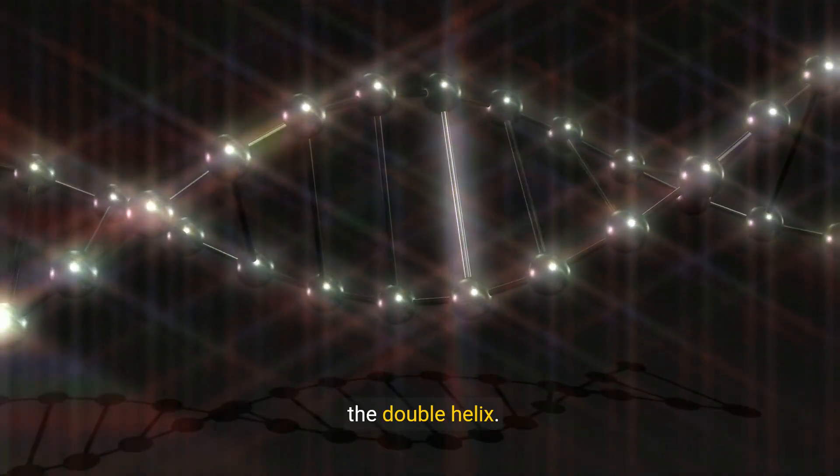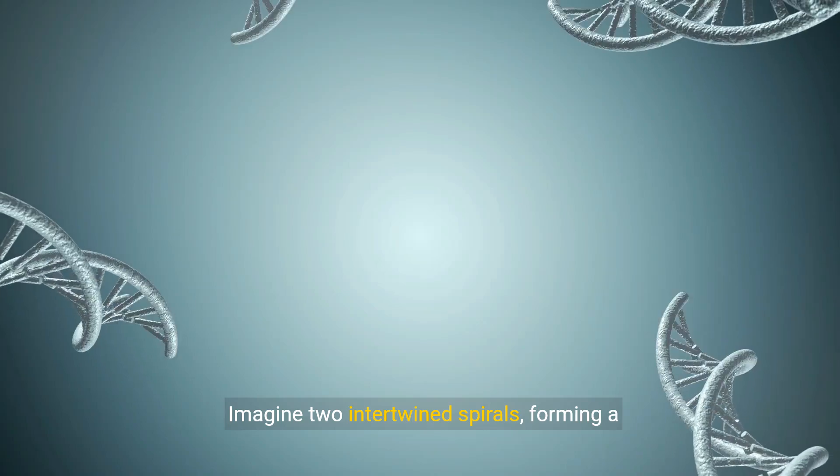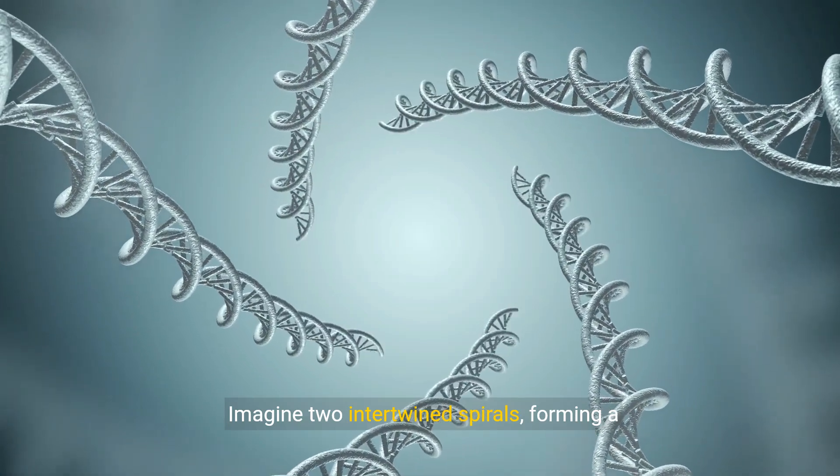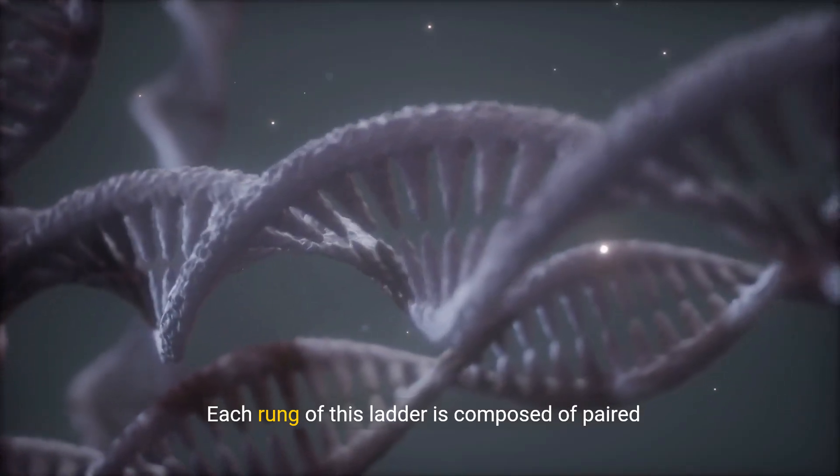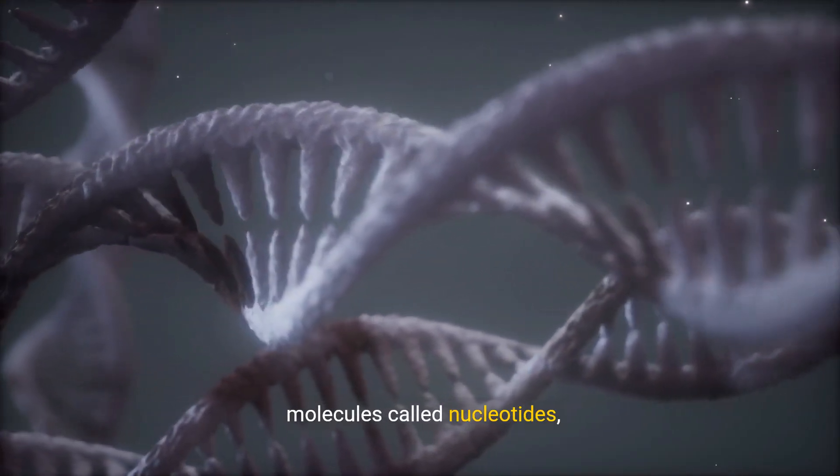At its core, DNA has a unique structure known as the double helix. Imagine two intertwined spirals forming a ladder-like shape. Each rung of this ladder is composed of paired molecules called nucleotides.